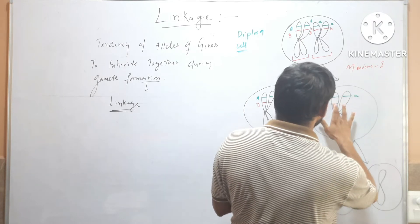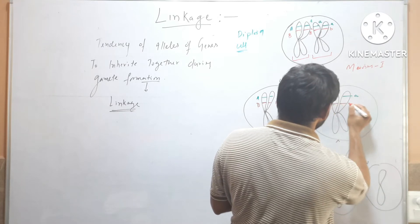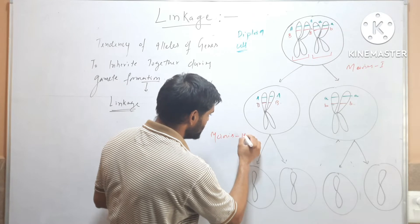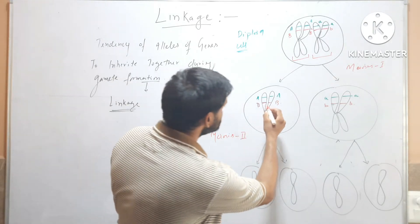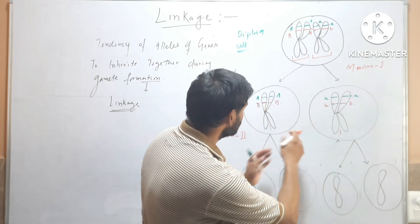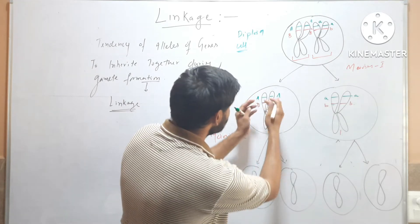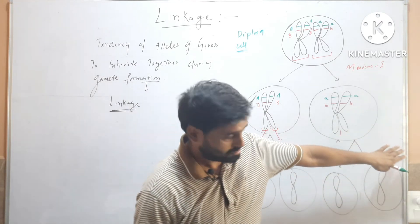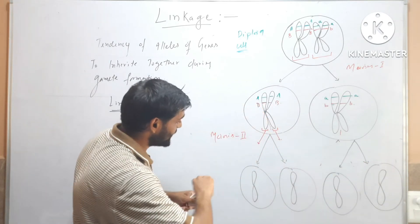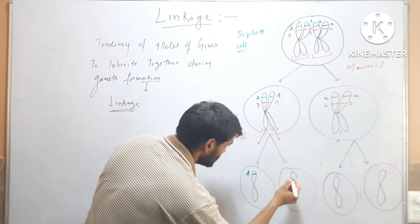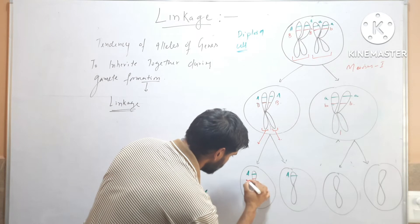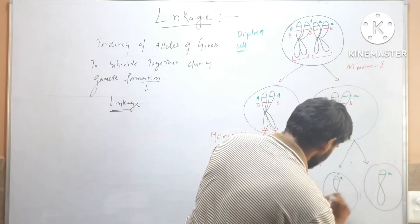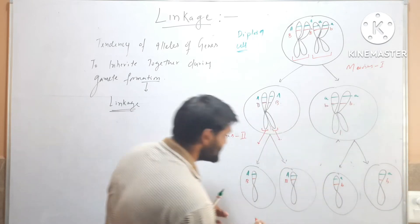After meiosis I, meiosis II will occur. During meiosis II, the chromatids separate — each cell divides into two cells, and each cell gets one chromatid. So the four gametes formed are: capital A capital B, capital A capital B, small a small b, and small a small b.